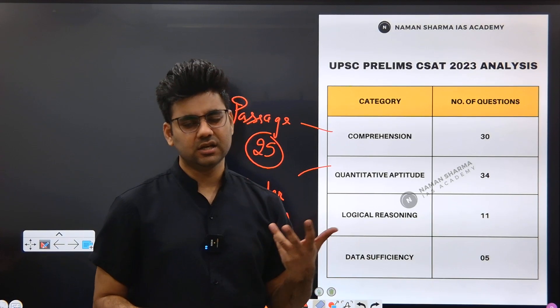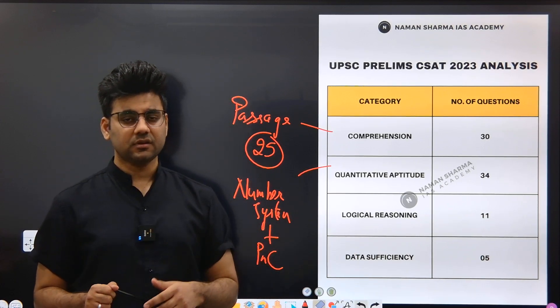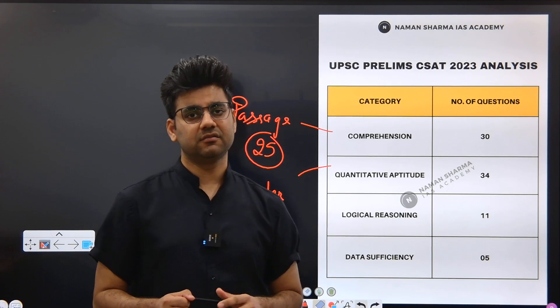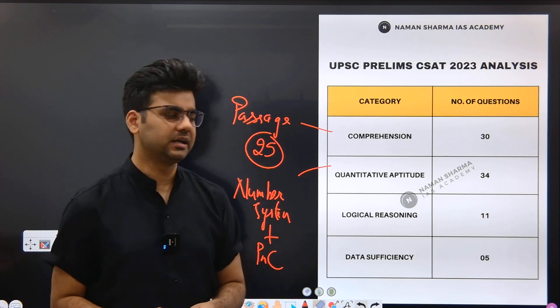Jaisa ki blood relation ka ek aadh question hi tha. Jaisa ki important topics the distance and distance measure ke questions jo the, usse bahut zyada kam question aaye the. Expectancy uske questions ki zyada thi but I think is baar logical reasoning ke questions humne socha se kam aaye the.